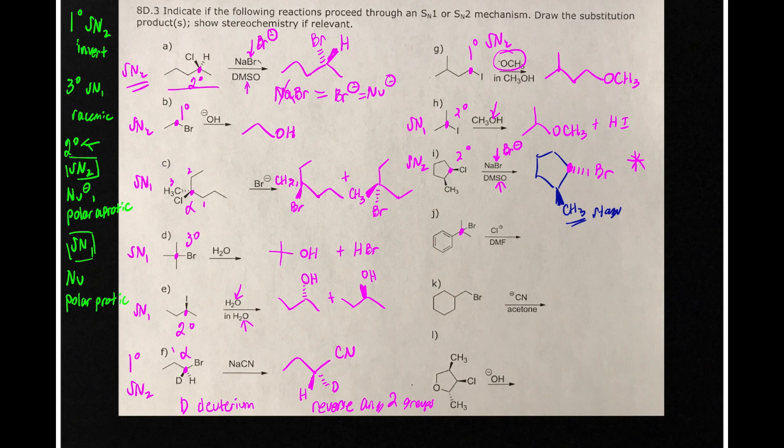In this next molecule, we have a tertiary alkyl halide, which means it's going to be SN1. Here's our nucleophile. So what we're going to do is replace the bromine for a chlorine. There's no stereochemistry, so we don't need to worry about wedges and dashes.